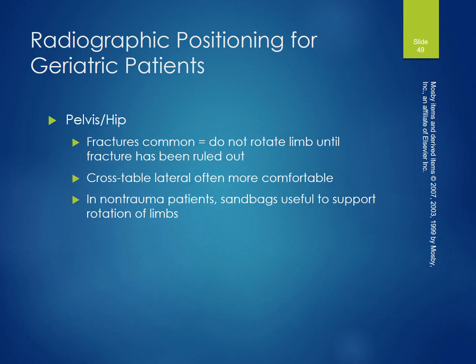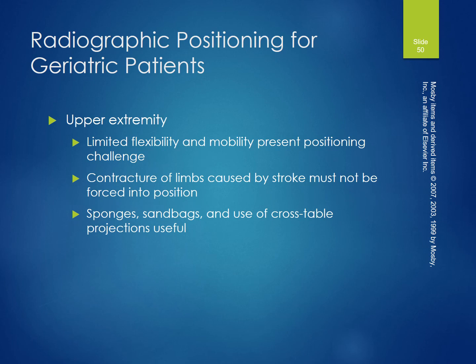Pelvis and hip fractures are common. Do not rotate the limb until the fracture has been ruled out. A cross-table lateral is often more comfortable. For non-trauma patients, sandbags are useful to support rotation of limbs. Upper extremity: limited flexibility and mobility present positioning challenges. Contractions of limbs caused by stroke must not be forced into position. Sponges, sandbags, and cross-table projections are useful.